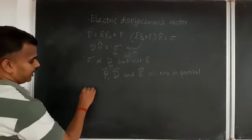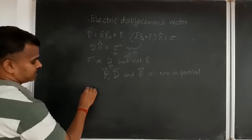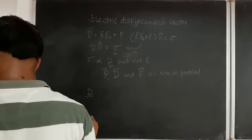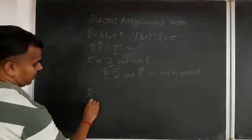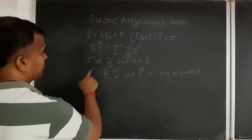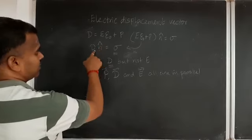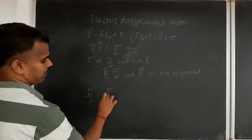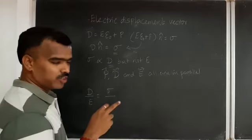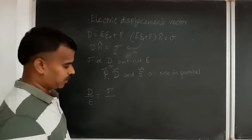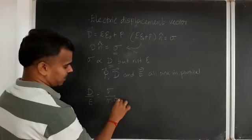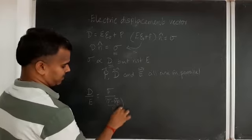We are going to take the ratio between D and E and calculate it. So what is D from this equation? D is written as σ. And as we know, E = σ/ε. Instead of σ, we can write σ minus σ_P, divided by ε.